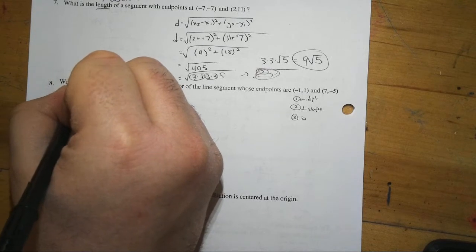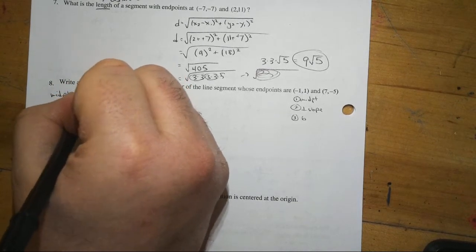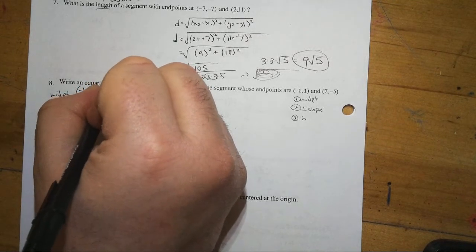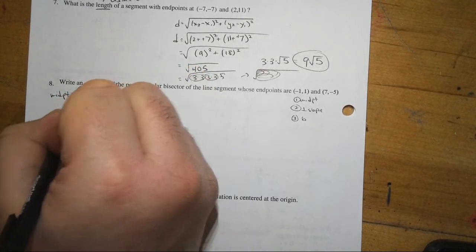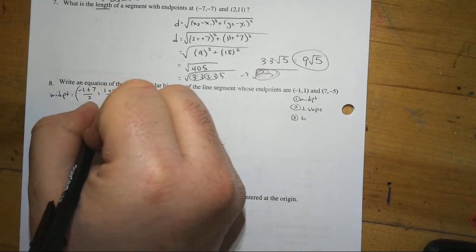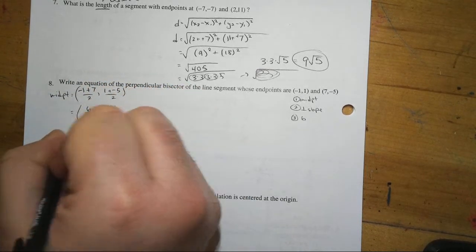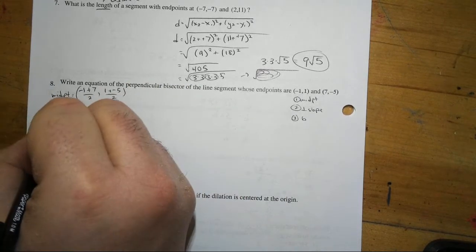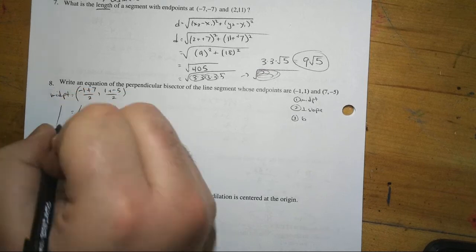So, it's just the sum of the x's. Negative 1 plus 7 over 2. Sum of the y's. 1 plus negative 5 over 2. And we're doing the average. So, this is 6 over 2. Negative 4 over 2. So, this is the point 3, negative 2. We also need our slope.